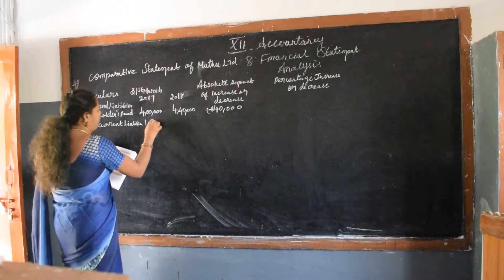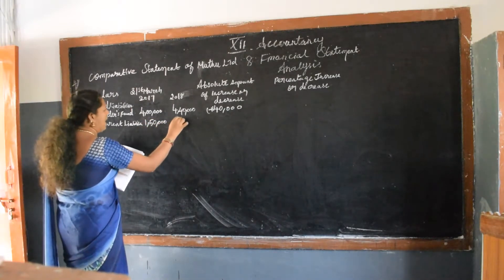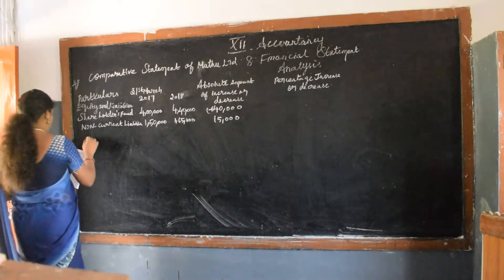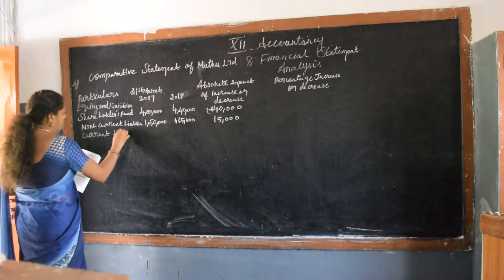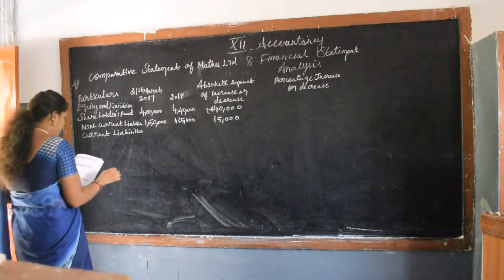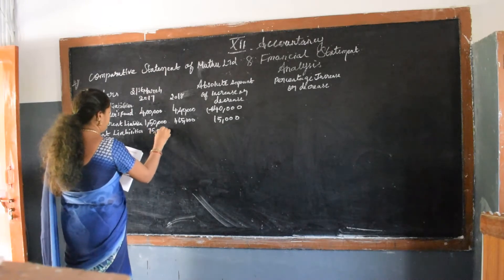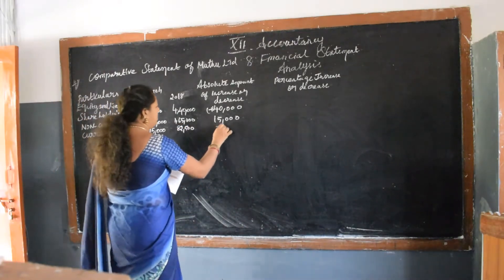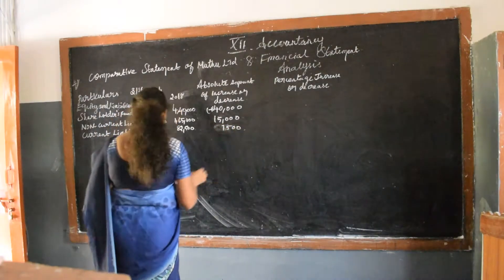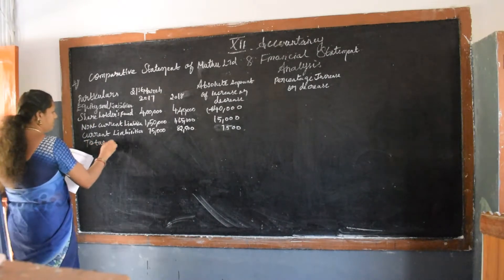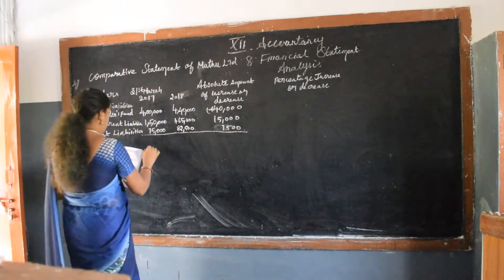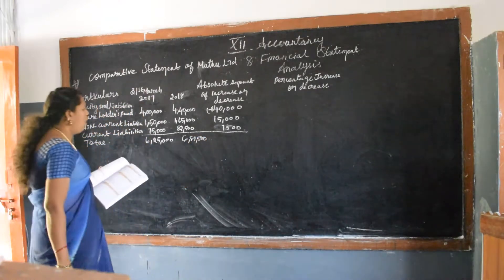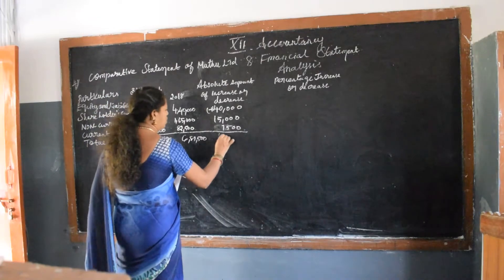Non-current liabilities is 1 lakh 50,000 and for the year it is 1 lakh 65,000. Note the difference — the difference is 15,000. Then current liabilities: the current liabilities is 75,000 and for 2018 it was 82,500. The difference is 7,500. Total: draw a line — you will get 6 lakh 25,000 and 6 lakh 87,500. Note the difference — you will get 62,500.